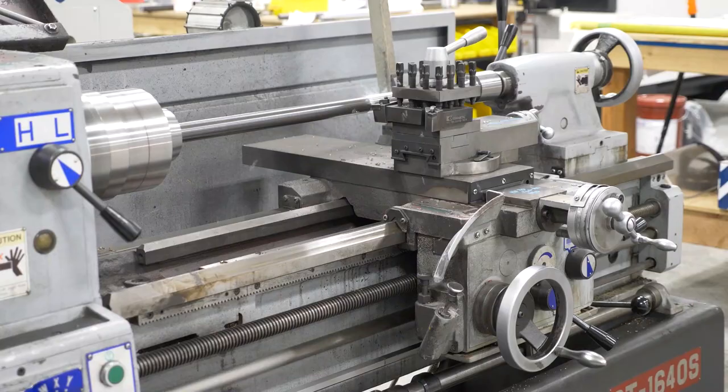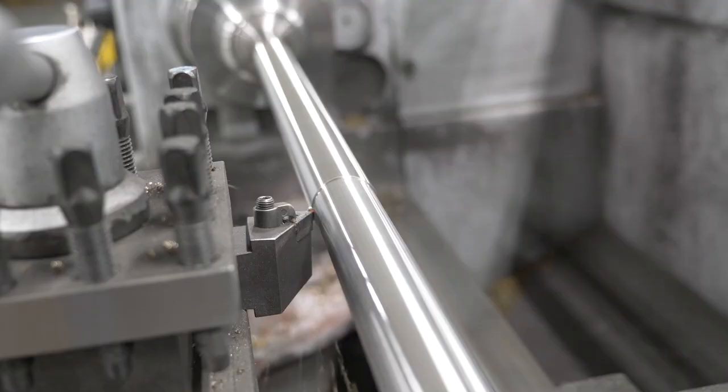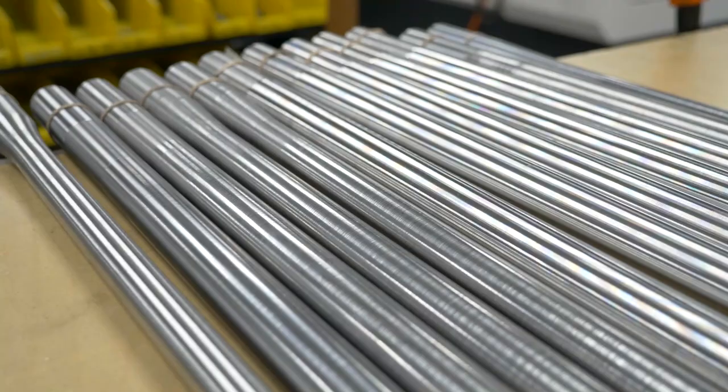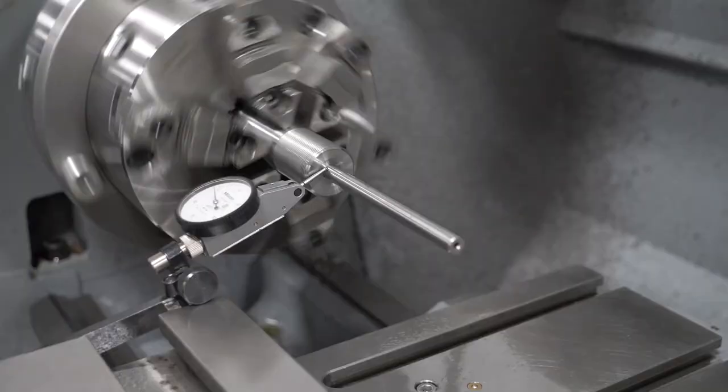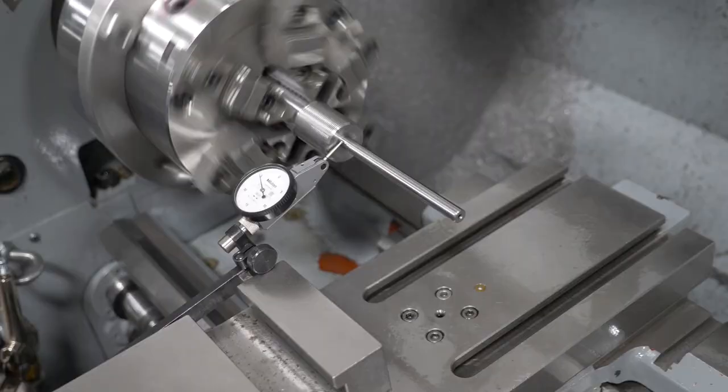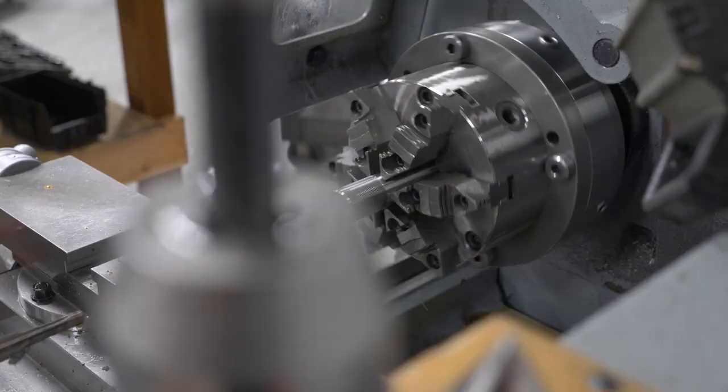Fixed shoulder barrels offer our largest contour selection, from light to our heaviest contours such as MTU or M24, as well as Palmas, Varmints, Sporters, and Taperless. We've selected and generated our contours to offer a variety of options to accept common stock inlets or to allow our custom fluting designs.